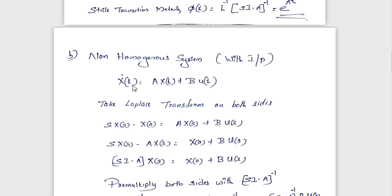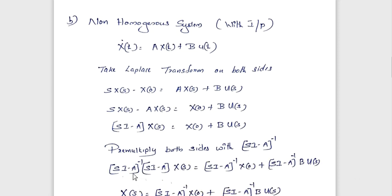Next, the non-homogeneous state equation is a system with input, or a system with a forcing function — that is, we have an input. The state equation is x-dot(t) = A·x(t) + B·u(t). Taking Laplace transform on both sides gives s·X(s) − x(0) = A·X(s) + B·U(s). Taking X(s) terms to the left side: (sI − A)·X(s) = x(0) + B·U(s).